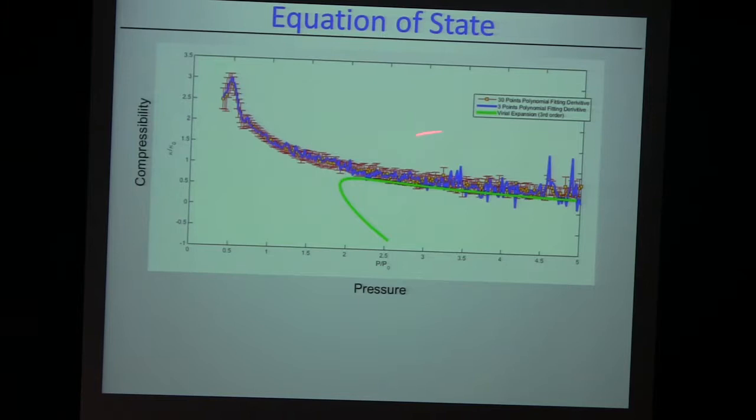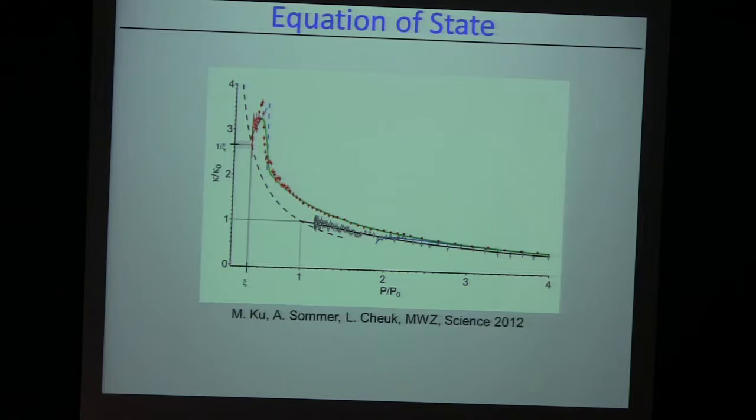It's a very precise measurement with error bars. You see the sudden rise and fall in the compressibility of the gas at a certain critical pressure that signals the superfluid transition. I'm showing you the result from 2012. This is the result from yesterday in our hybrid trap — it works beautifully.